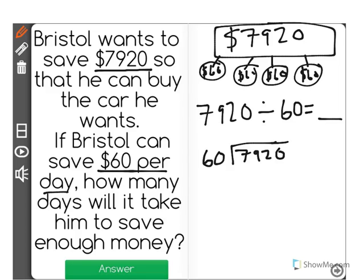Now I know that $60 doesn't fit into $7, but it will fit into $79 once. Now I have $192. I know that $60 could fit into that three times, which will be $180, and I'll have $120 left.